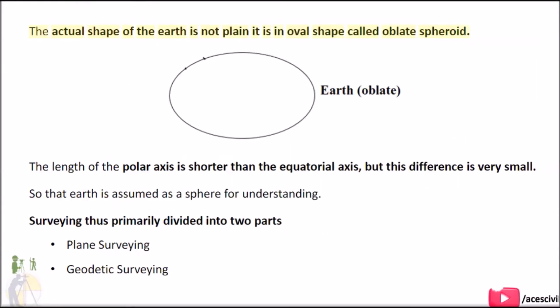The actual shape of the Earth is not plane; it is in an oval shape called oblate spheroid. The length of the polar axis is shorter than the equatorial axis, but this difference is very small, so the Earth is assumed as a sphere for understanding.